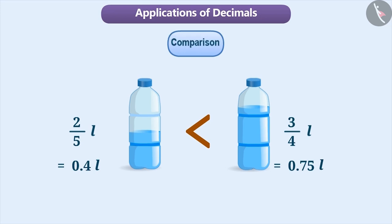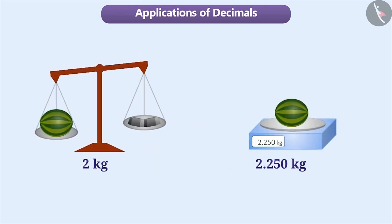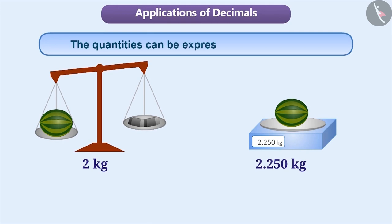Decimal numbers are not only useful in comparing quantities but also in expressing quantities more precisely. For example, here, the weight of a watermelon is expressed in two ways.